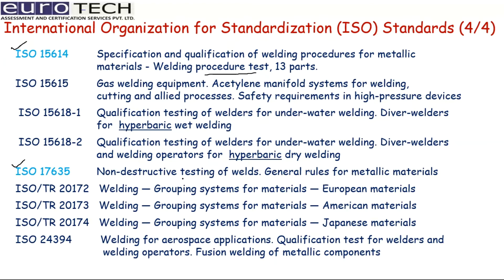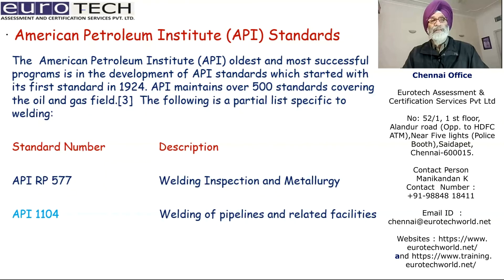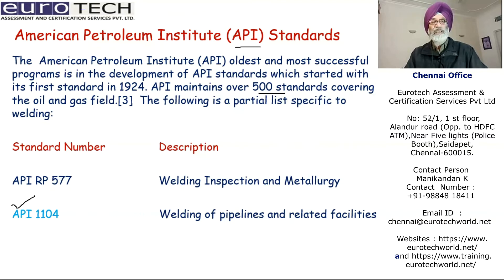The next standard is American Petroleum Institute — the API standards. API is one of the oldest and most successful programs in standards development, starting with the first standard in 1924. API maintains over 500 standards covering oil and gas fields. The important one here is API 1104, which is primarily for the welding of pipelines and related facilities.